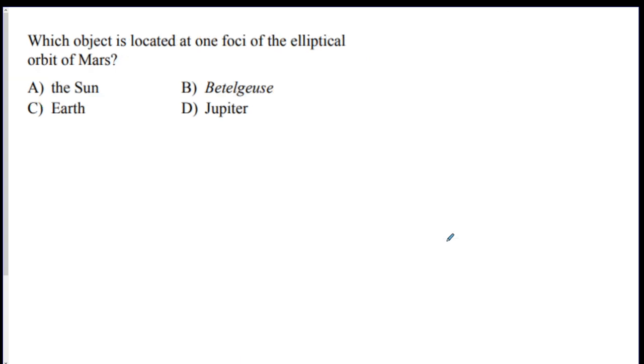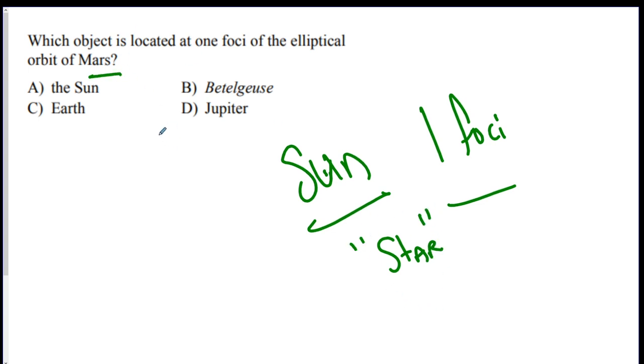Which object is located at one of the foci of the elliptical orbit of Mars? Remember, according to Kepler's first law, the Sun is always at one of the foci. Every time. Now you could replace that with a star in general is always at one of the foci. But if it's Mars, that means it's our solar system, which means it's the Sun. A.